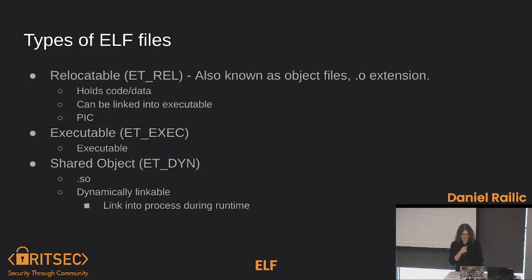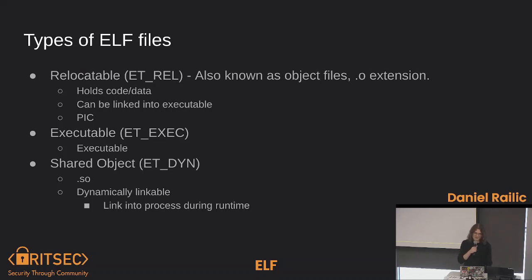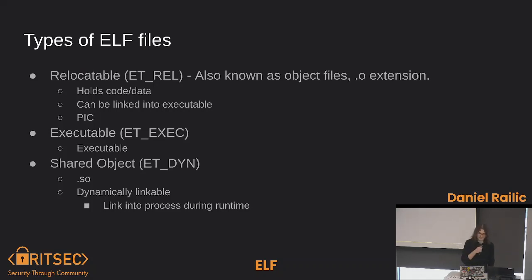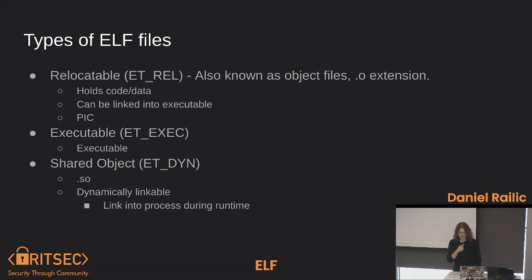Let's start nice and slow. What are the types of ELF files? We have relocatable ELF files, the ET-REL files, also known as object files. These are files with .o extensions. They're position-independent code. They hold data and code, and you link them into executables — if you have a bunch of .o files, you can combine them together to get an actual executable file. You have executable files, which are executable. You have shared object files, which are dynamically linkable.